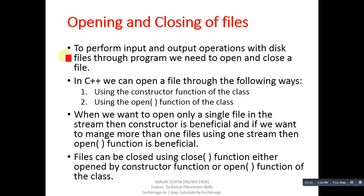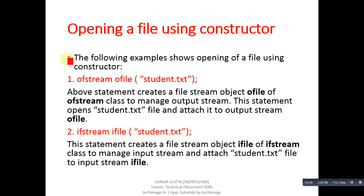To perform input and output operations with disk files through a program, we need to open and close a file. In C++ we can open a file in two ways: using the constructor, or using the open function of the class. When opening only a single file, the constructor is beneficial. For managing more than one file using one stream object, the open function is beneficial. Files can be closed using the close function.